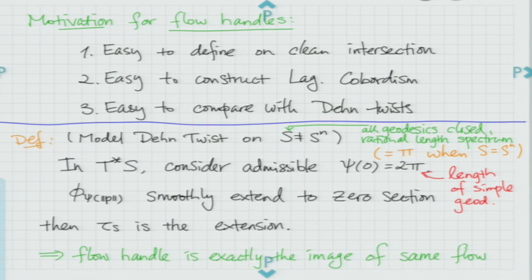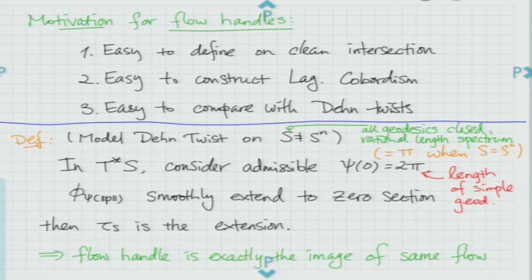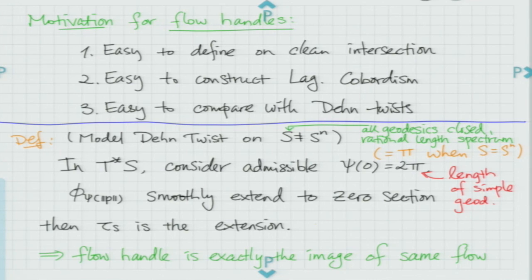When S has all geodesics closed and rational length spectrum, let's assume all geodesics have the same length, say 2 pi. In this case, you take the Weinstein neighborhood T* S and consider an admissible function so that psi(0) = 2pi. You do this kind of flow in T* S. This flow extends smoothly to the zero section — you extend by identity at the zero section. So tau_S is going to be such an extension, a symplectomorphism in T* S which fixes the zero section, with a slight perturbation near the zero section to ensure smoothness.